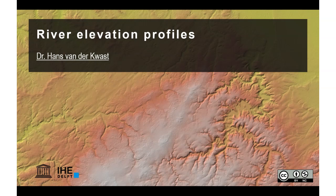In this video I'm going to demonstrate two methods to derive river elevation profiles. The first method is quite straightforward and we use the profile tool to visualize the elevation profile on the river. The second method uses the QChainage plugin where we sample on a fixed distance the elevation from an elevation model, and then we visualize it in a graph using the DataPlotly plugin.